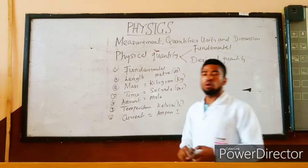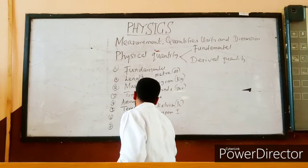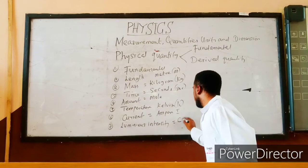We also have the last one called luminous intensity — that is the seventh fundamental quantity. Luminous intensity is measured in candela, and the symbol is cd.